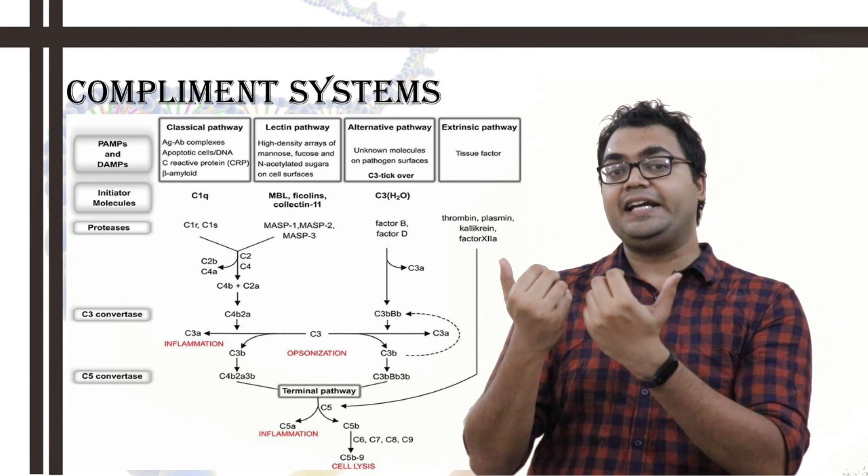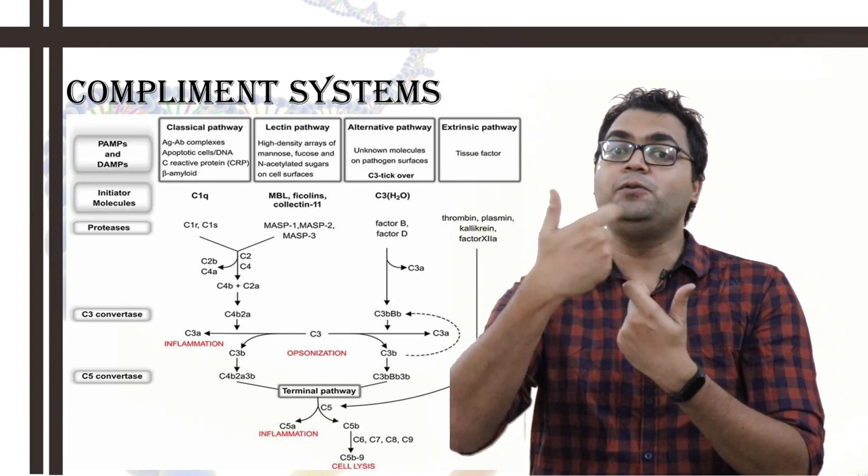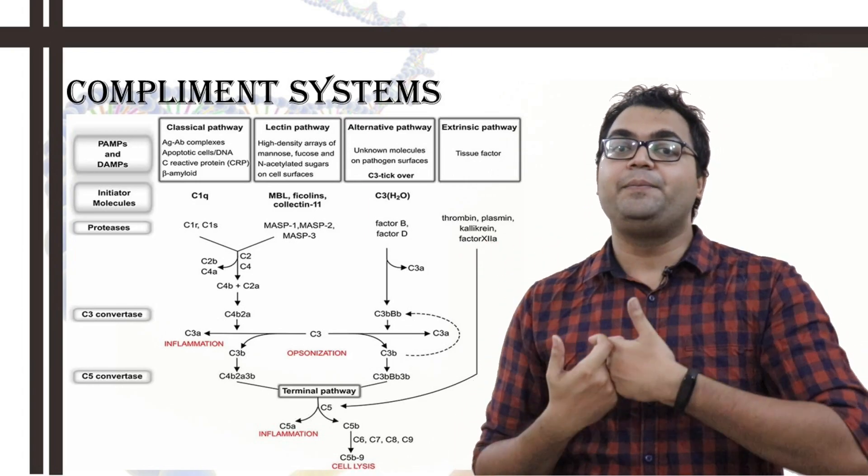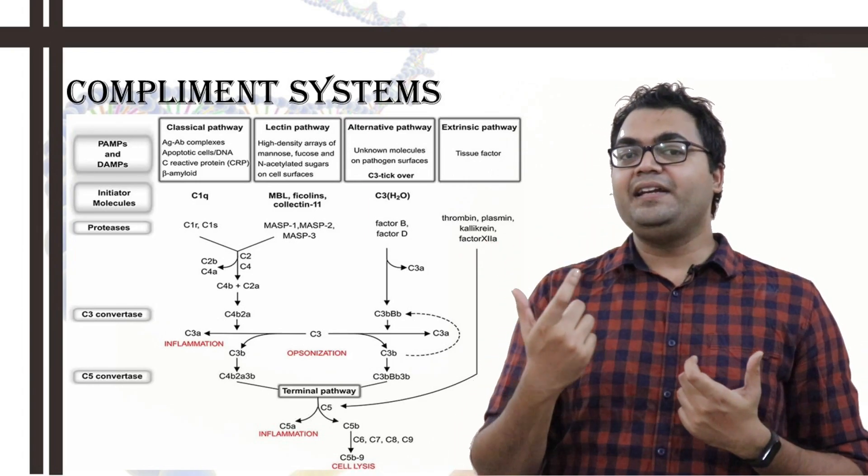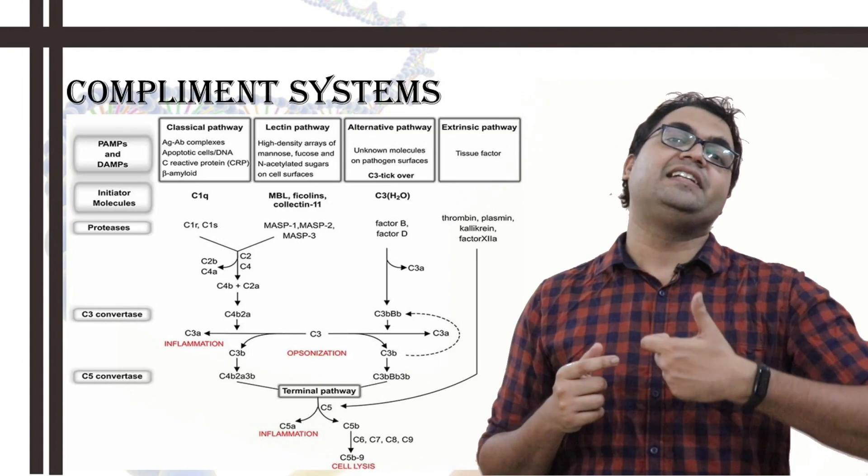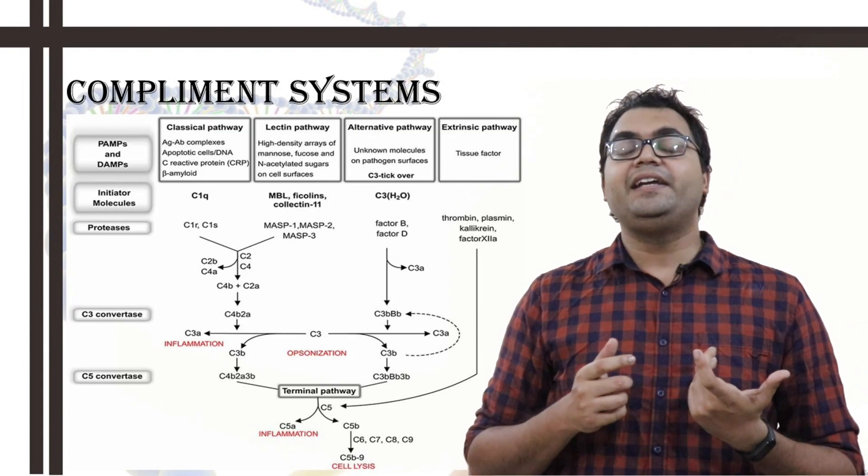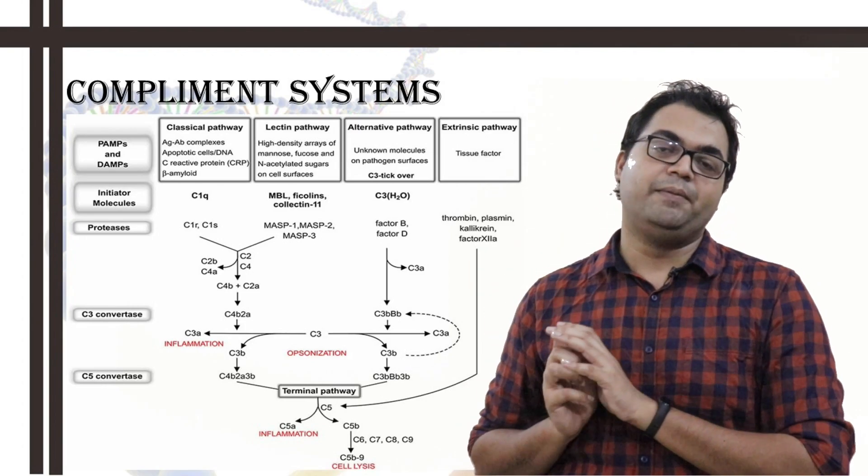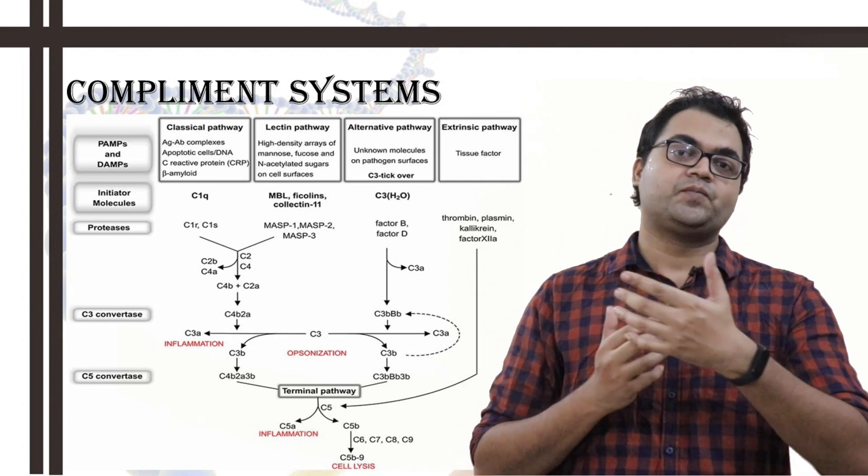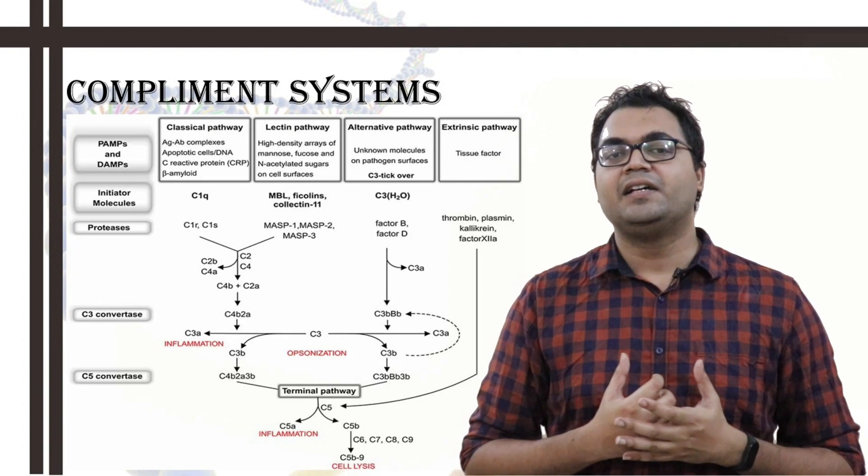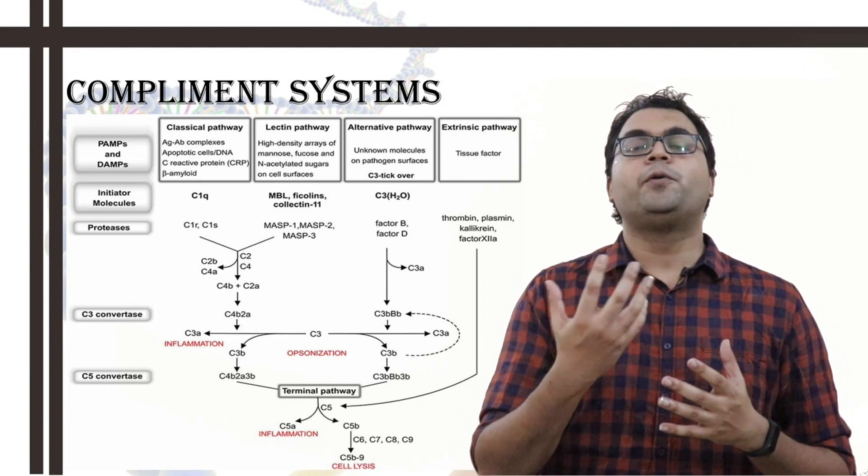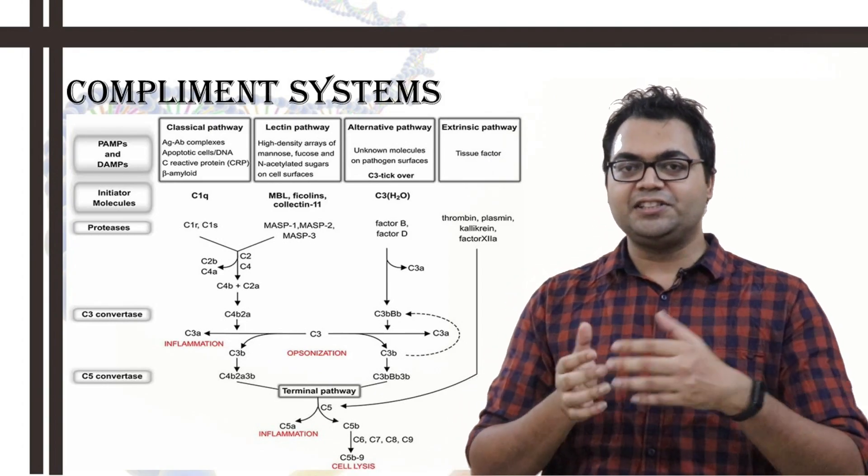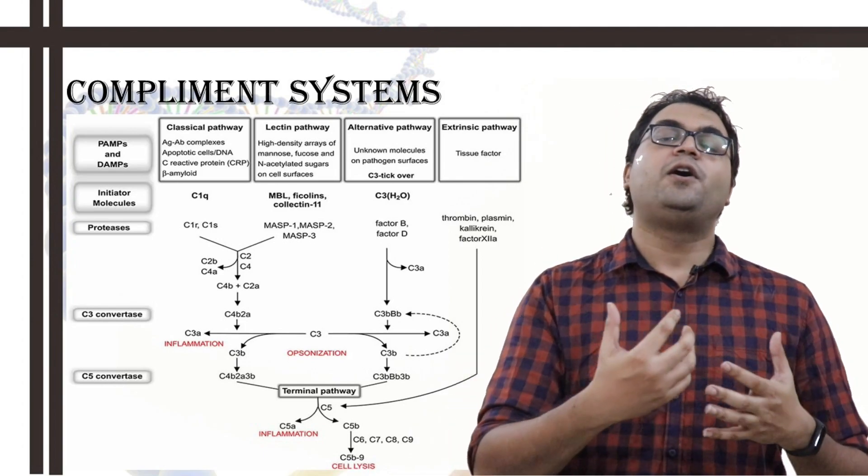Again, due to the conformational changes happening in factor B, after it has bound to C3b. And then C3b capital B small b again has C3 convertase activity, but it is not in the liquid phase. It is in the membrane bound phase, or membrane bound attachment phase. So, this is how alternative pathway works. There is also a protein known as properdin, which has a specific function and can also induce alternative pathway.